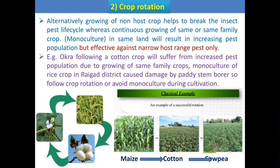A classical example of crop rotation: maize (a cereal crop), cotton (a fiber crop), and cowpea (a leguminous crop) — all non-host crops of successive cropping. This technique helps to reduce the pest population in that particular season or the next crop.